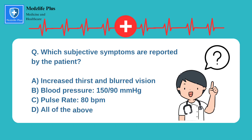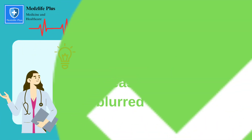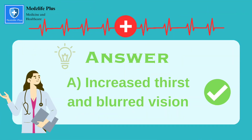A. Increased thirst and blurred vision. B. Blood pressure 150/90 mmHg. C. Pulse rate, 80 beats per minute. D. All of the above. The right option is A, that is increased thirst and blurred vision.